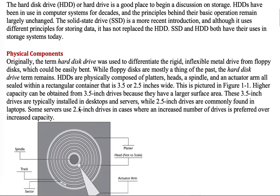Originally, the term 'hard disk drive' was used to differentiate the rigid, inflexible metal drive from the floppy disk, where the circular medium was flexible. But the term 'hard disk drive' remains in use.